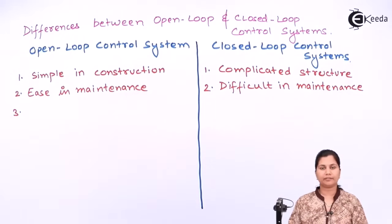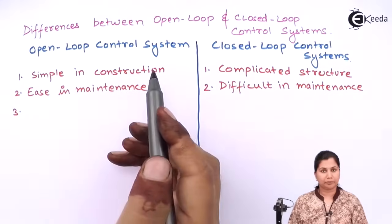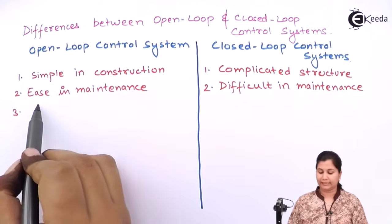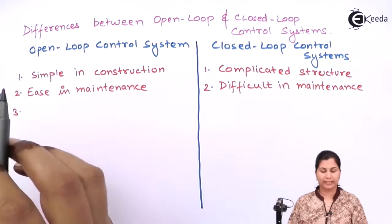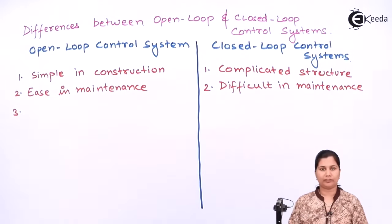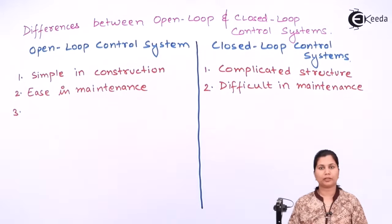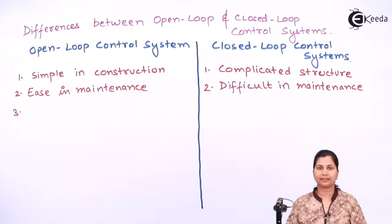The third difference is that as open loop control systems are simple and easy to maintain with few elements involved, they will be cheap. Whereas the closed loop control systems, having many elements in them, will be expensive.